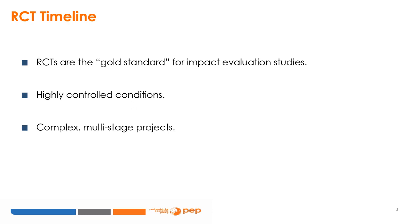As we have seen in previous lessons, randomised control trials are the gold standard for impact evaluation studies. Through the random assignment of units to treatment and control groups, RCTs ensure that groups are comparable and that the causal impact of the programme will be identified. This requires highly controlled conditions, which is why RCTs are often complex multi-stage processes that require intensive planning and monitoring to ensure that everything works.